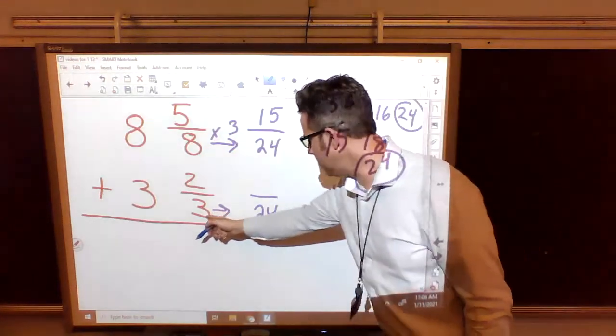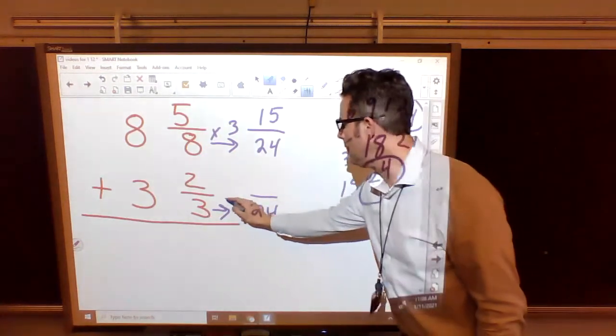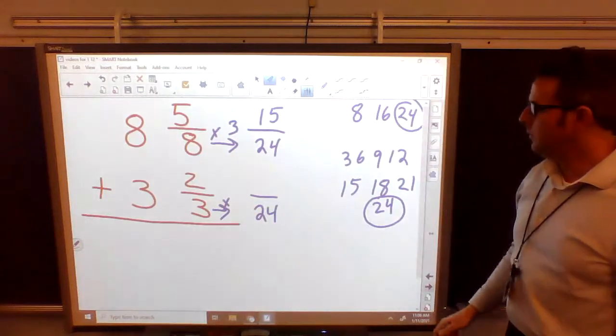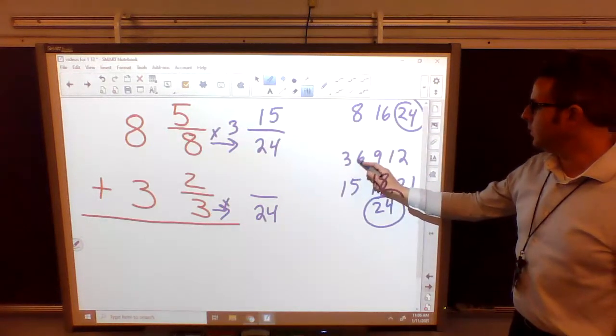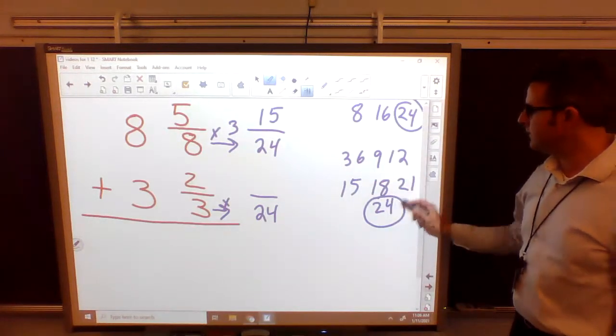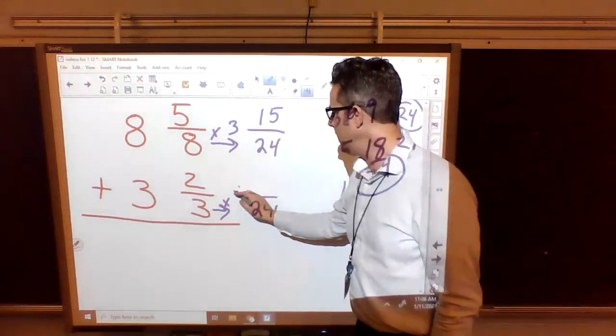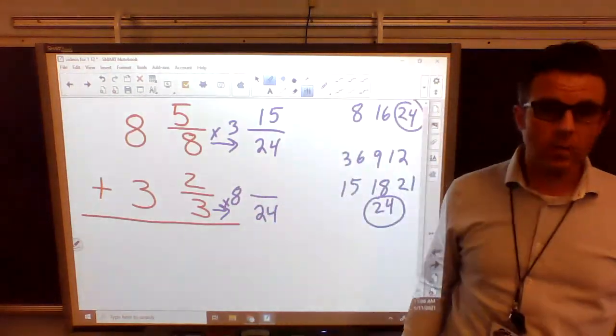All right, same thing on the bottom. How do we get from 3 to 24 by multiplying? Well, if you don't know, count your numbers. 1, 2, 3, 4, 5, 6, 7. There's 8 of them. So we have to do 8 times 3, which is 24.